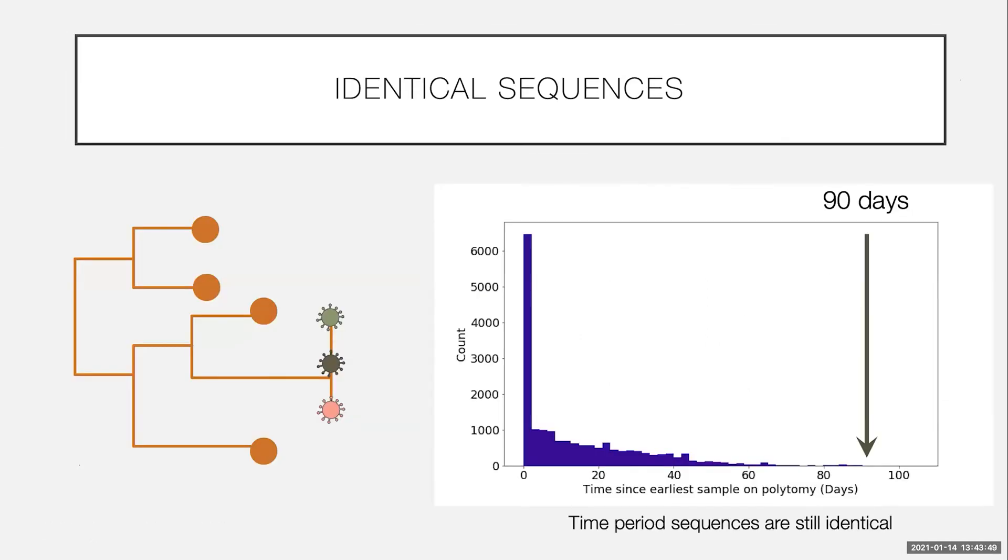But we don't have that with SARS-CoV-2 very often. And we can see that this figure on the right here is a distribution of the time spans of the earliest and latest date on a polytomy. And we can get sequences that are up to 90 days apart and still identical.